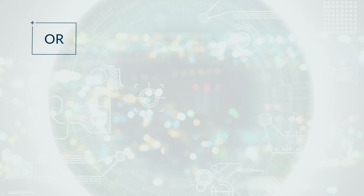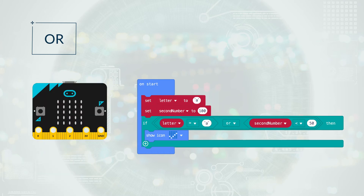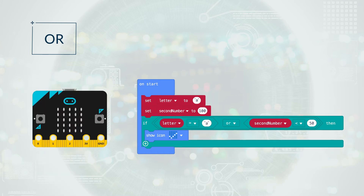OR lets you have two conditions, and they will only result in true if one or both of them are true. If neither are true, it will return false. Look at this example. If the contents of letter is equal to the letter A, or the contents of second number is less than 50, then display a tick.